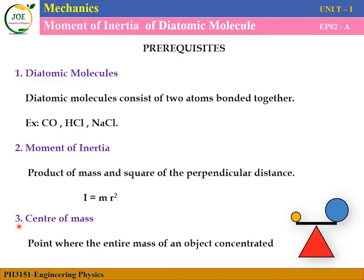The third pre-requisite is center of mass. Consider two objects on a bar with different masses. There is a particular point at which the bar remains balanced. The point where the entire mass of an object is concentrated is called the center of mass.